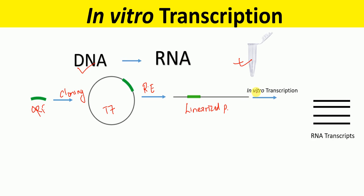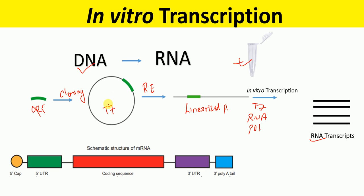The linearized plasmid is subjected to in vitro transcription using an enzyme such as T7 RNA polymerase. From this reaction we get RNA transcripts. Structure-wise, these RNA transcripts consist of a 5' cap, 5' UTR, coding sequence, 3' UTR, and 3' poly-A tail.